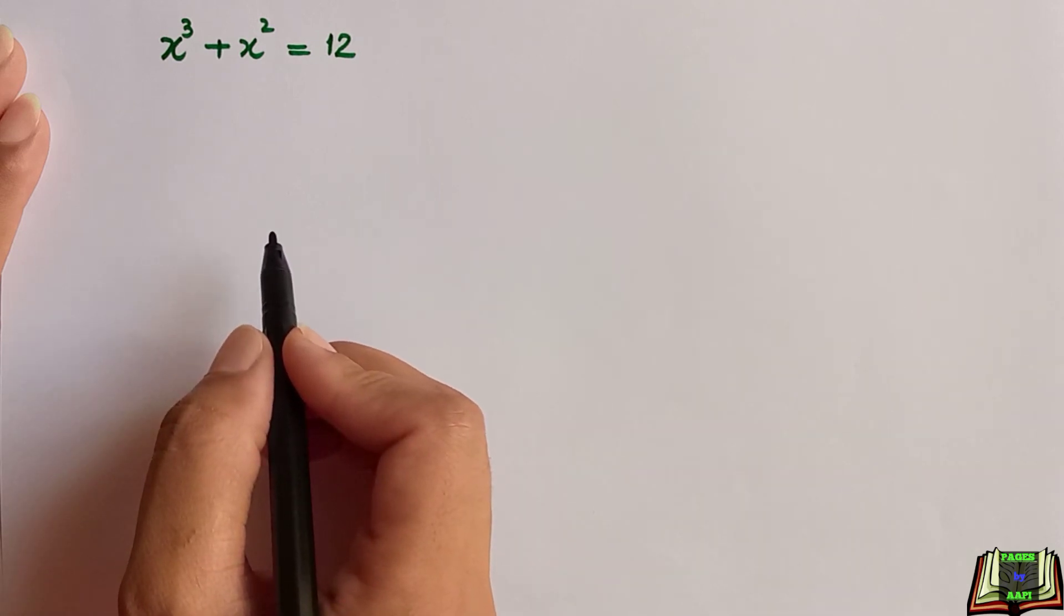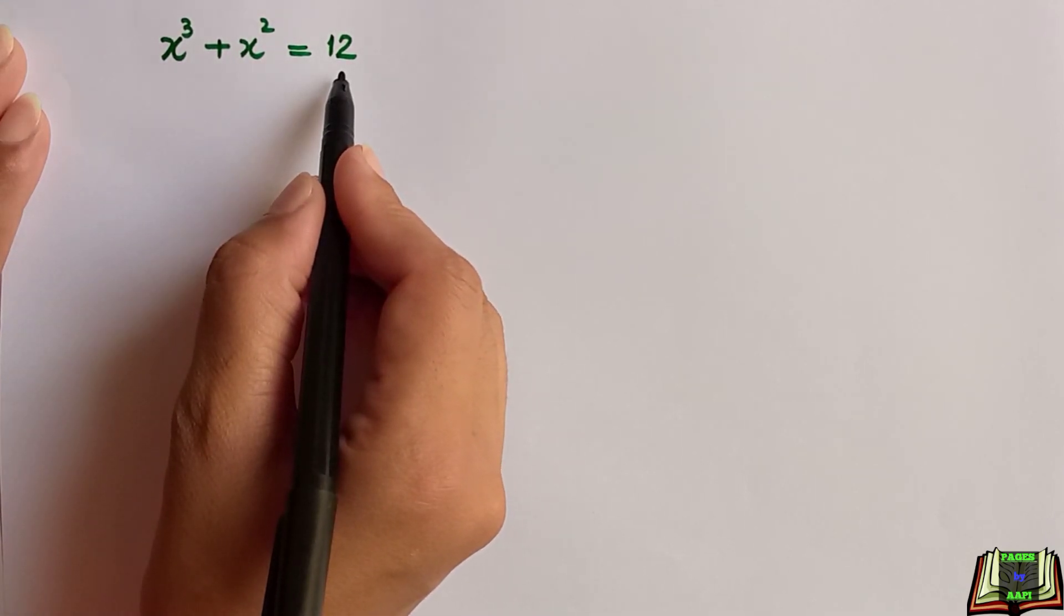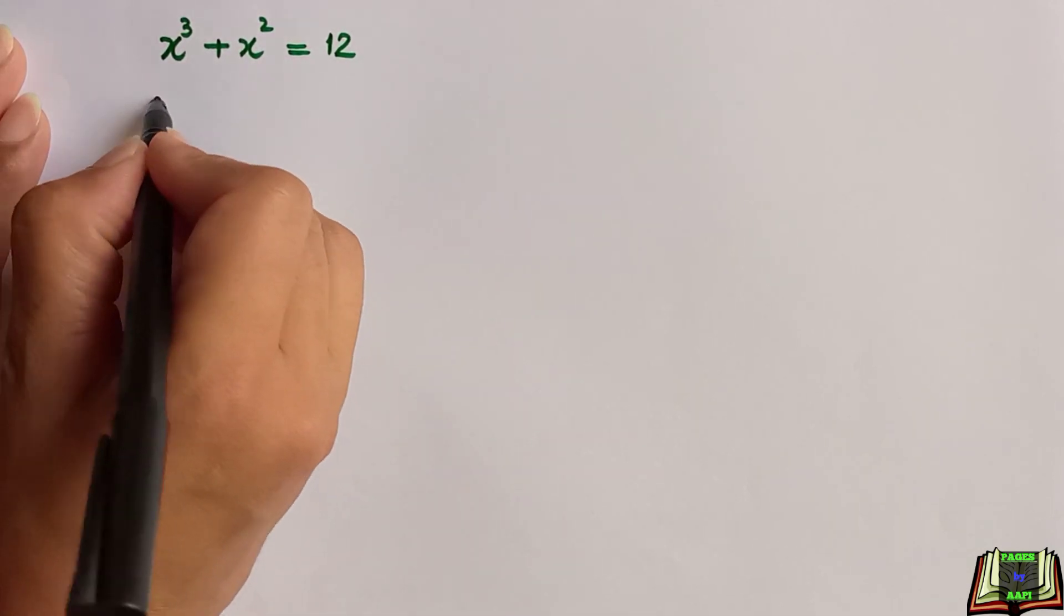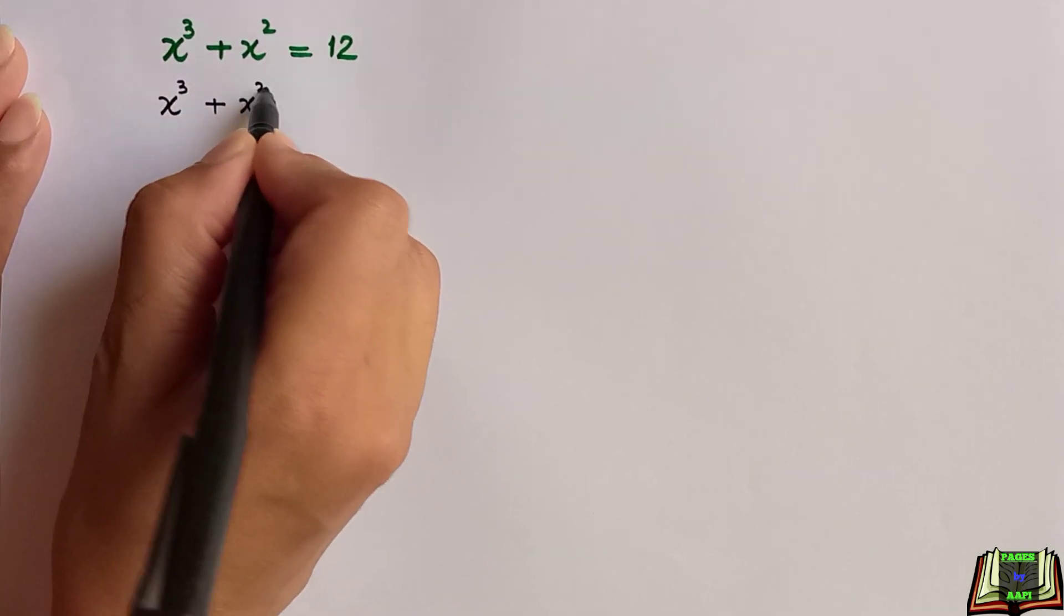First of all, look at the question: x cube plus x square is equal to 12. In the very first step we will take this 12 to left hand side, so it will become minus 12.